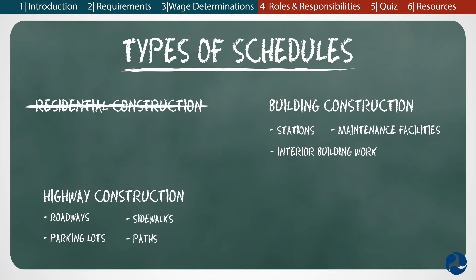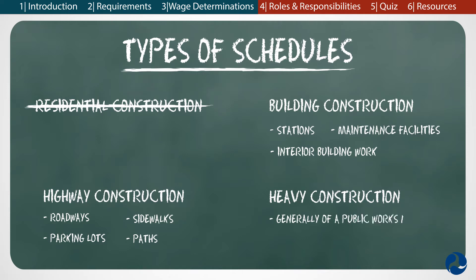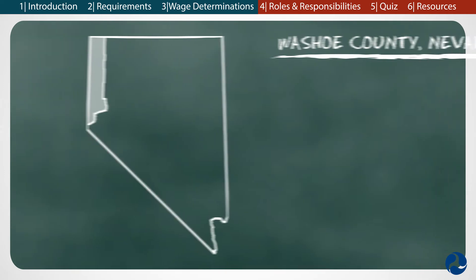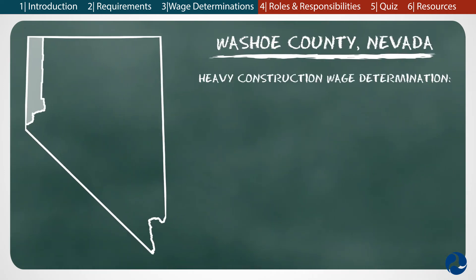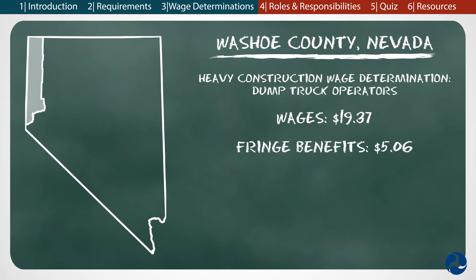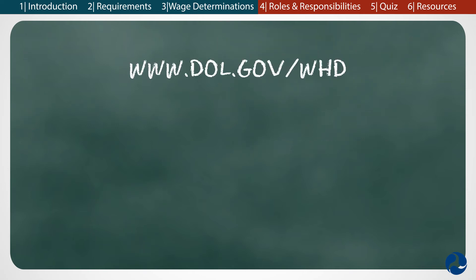An example would be a project to improve pedestrian access to and from a rail station. Finally, there is heavy construction, which is a catch-all category that includes projects generally of a public works nature. Most rail projects fall into this category. For example, according to the heavy construction wage determination for Washoe County, Nevada, dump truck operators must be paid at least $19.37 in wages and $5.06 in fringe benefits. If there is not a wage determination schedule listed for a particular job on a project, contact the project sponsor for more information.